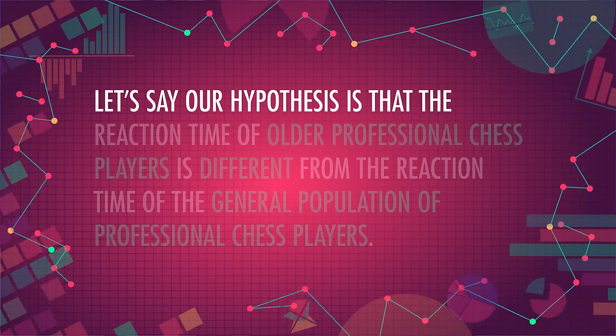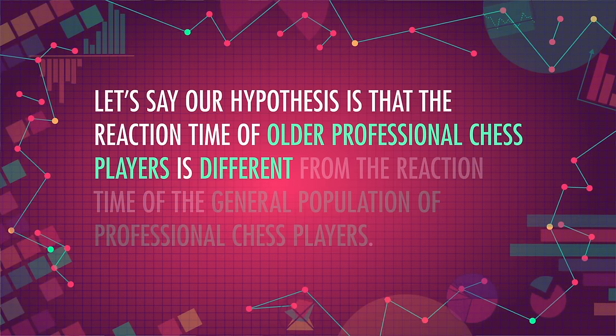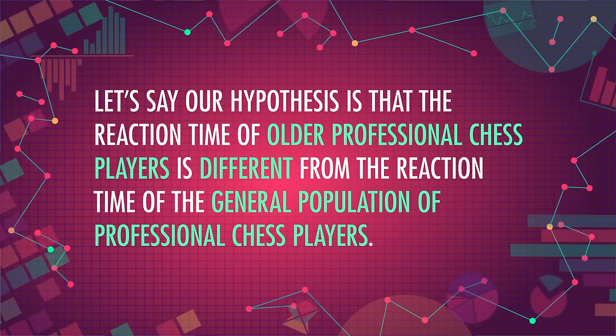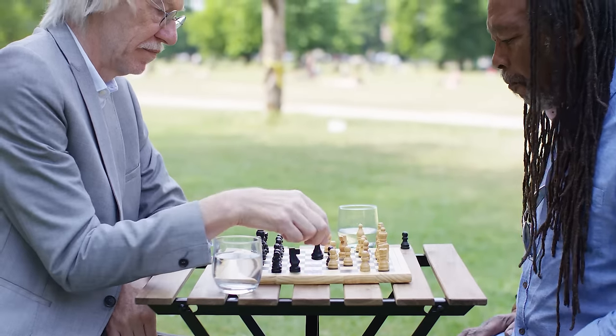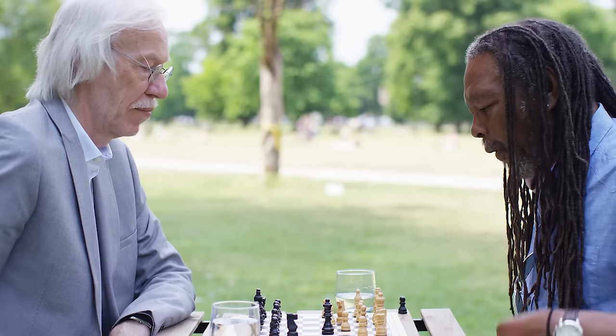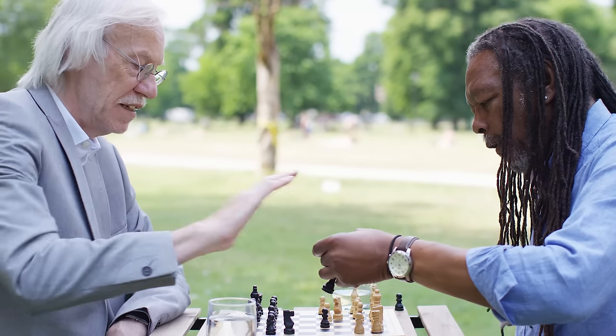Let's say our hypothesis is that the reaction time of older professional chess players is different from the reaction time of the general population of professional chess players. Even if older chess players are the same as their colleagues, if we ran the study over and over, we'd expect that 5% of the time we'd mistakenly reject the null if it were true. This is one reason why p-values are pretty controversial in the statistical community right now. Not everyone agrees that a p-value less than .05 is sufficient evidence to reject the null hypothesis. In fact, some studies that look at incredibly important things, like new medications, have already decided that an alpha of .05 isn't low enough. They want p-values lower than .01, so that if the null hypothesis is true, they'll only mistakenly reject it 1% of the time.